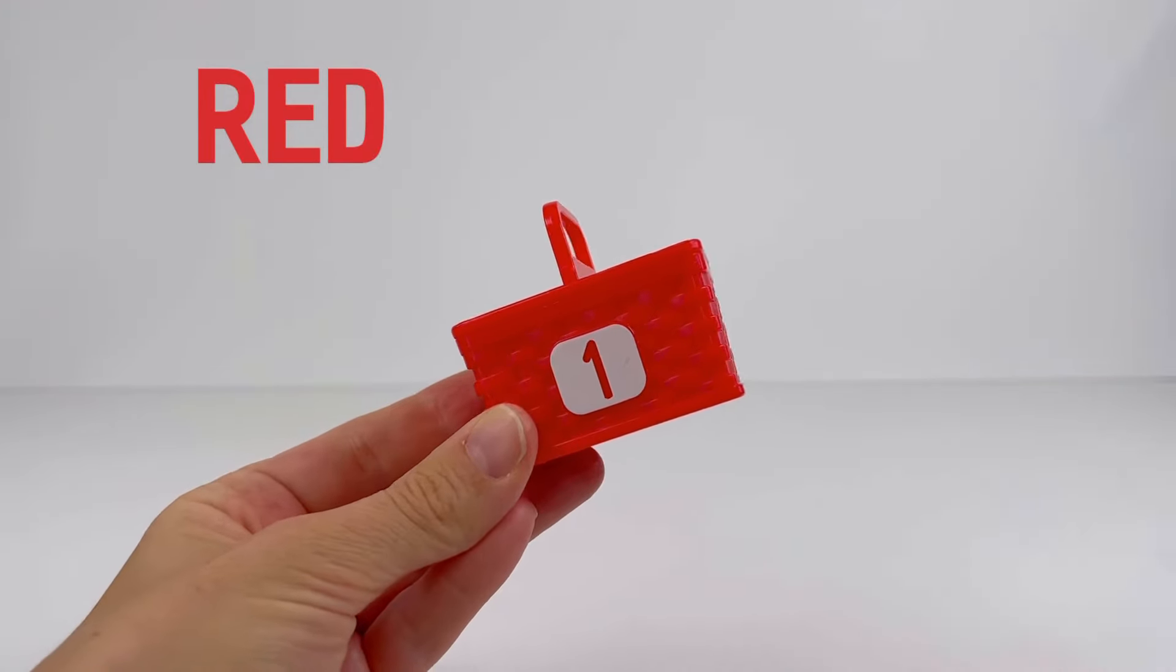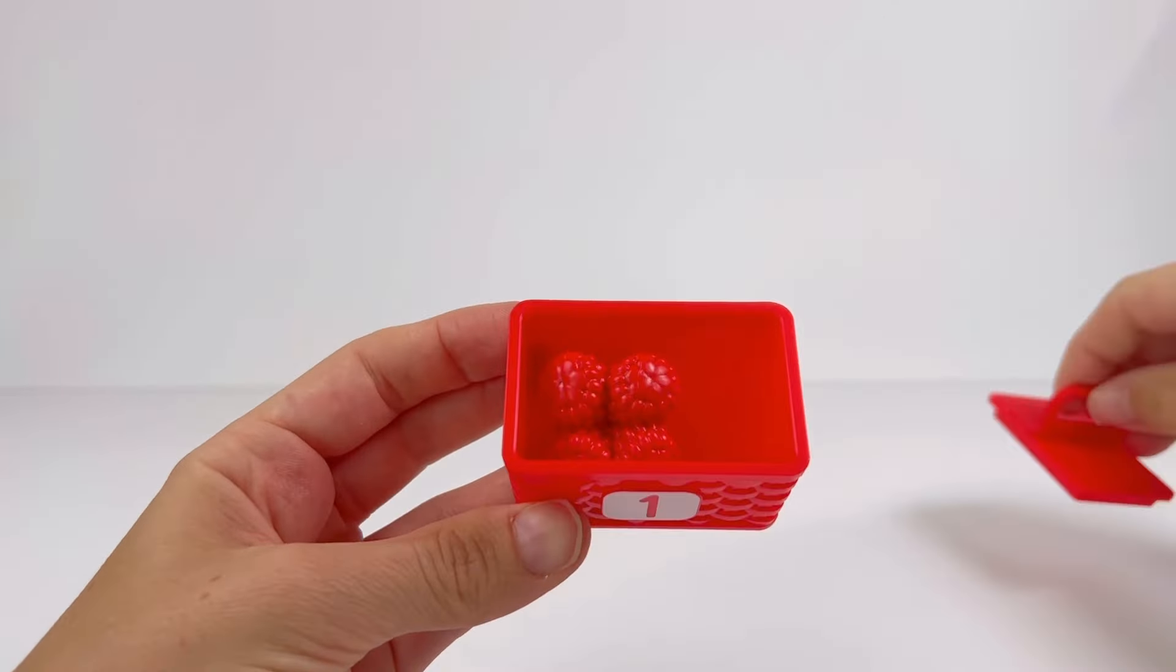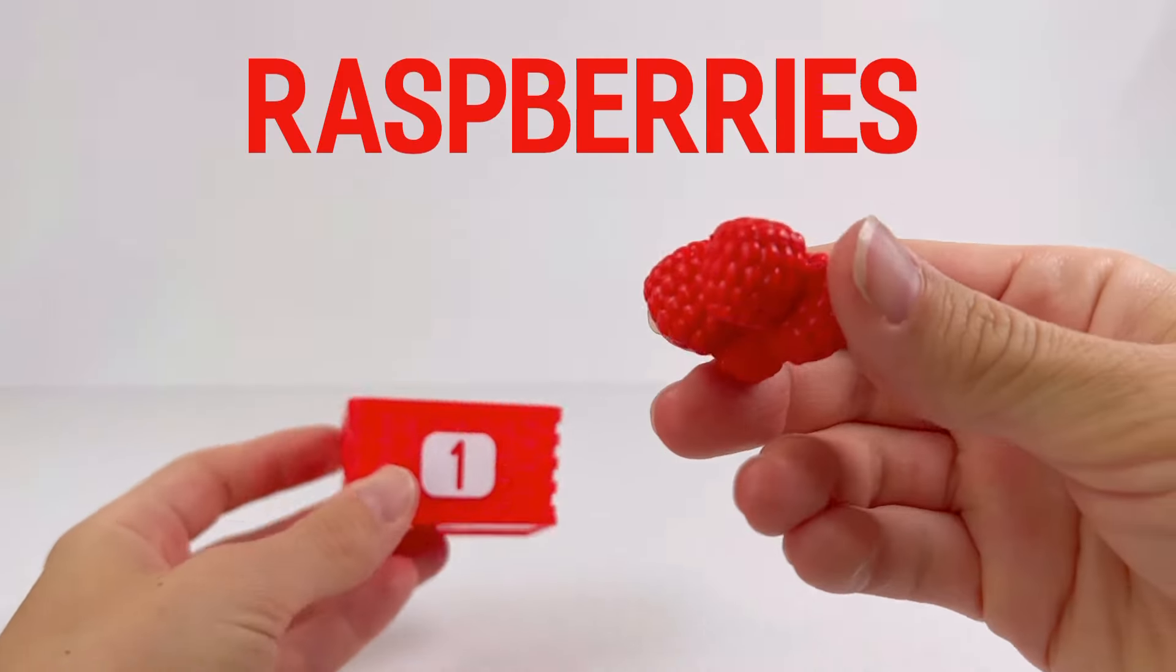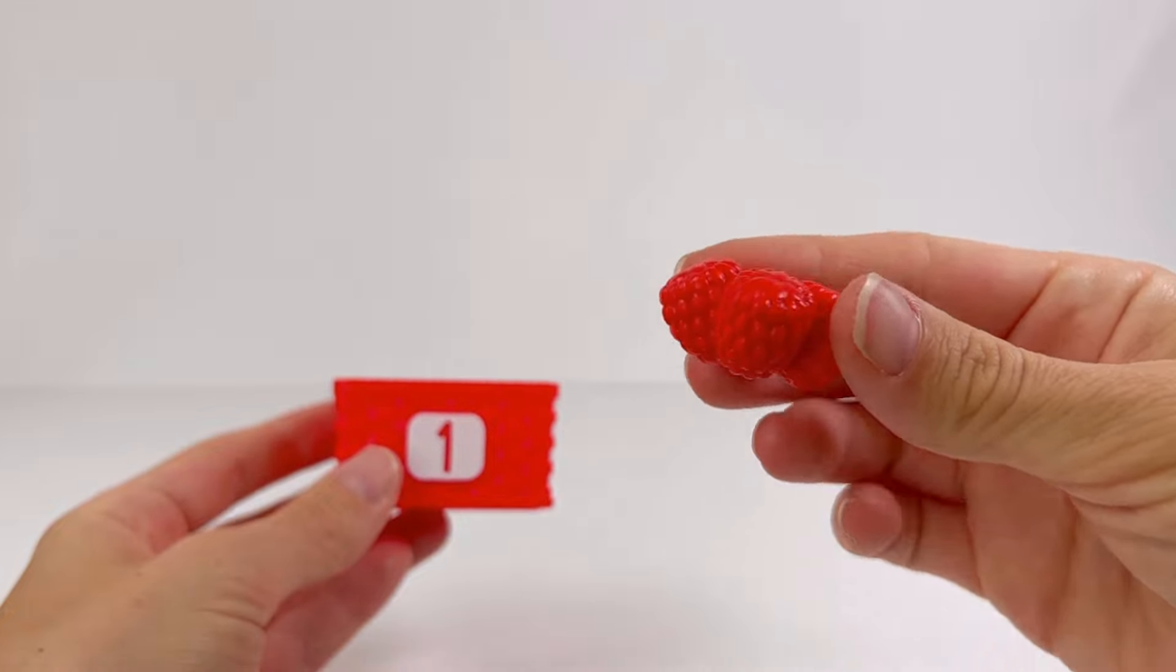This picnic basket is red and has the number one on it. Let's see inside. It's red raspberries, they are a yummy fruit that's good for you.